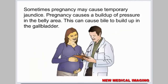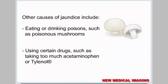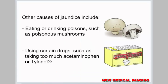Sometimes pregnancy may cause temporary jaundice. Pregnancy causes a buildup of pressure in the belly area, which can cause bile to build up in the gallbladder. Other causes of jaundice include eating or drinking poisons such as poisonous mushrooms, and using certain drugs such as taking too much acetaminophen or Tylenol.